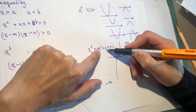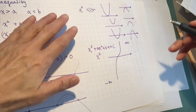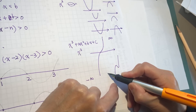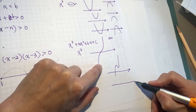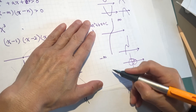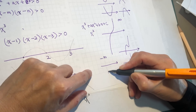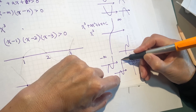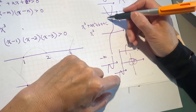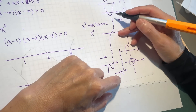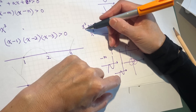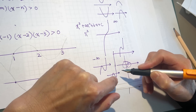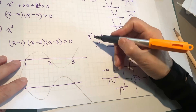All those ax squared plus bx plus c terms may change the shape of the graph — it may have some bumps. These bumps may meet the x-axis at 1, 2, or 3 points. But as x goes to the positive extremity, the y value becomes bigger and bigger, and as x goes to the negative extremity, the y value goes to negative extremity. That is the nature of the x cubed graph.